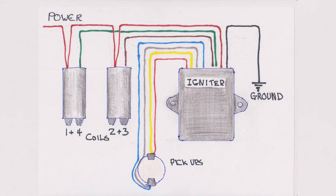Power supply to the igniter, ground for the igniter, coil wires, and pickup wires. After that, it's just a case of tracing the remaining wires and seeing what they do and whether they need to be left disconnected or grounded.